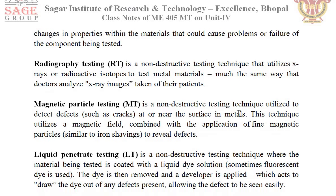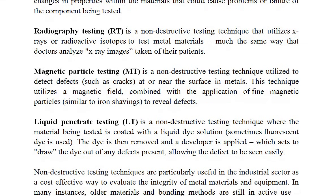The next method is magnetic particle testing, which is a non-destructive testing technique used to detect surface defects such as cracks at or near the surface of the metal. This technique utilizes a magnetic field combined with the application of fine magnetic particles, similar to iron shavings, to reveal and detect defects. Magnetic particle testing is used when testing the surface.